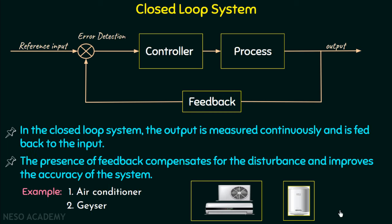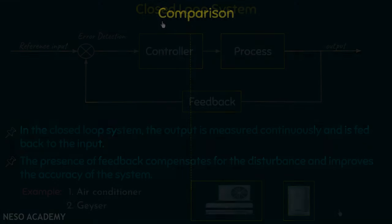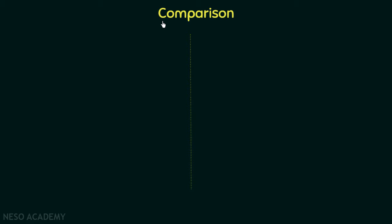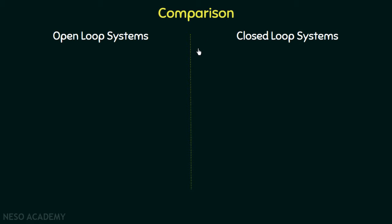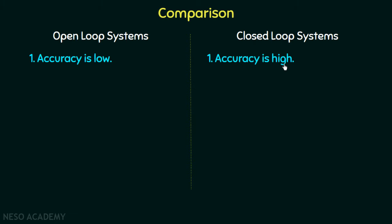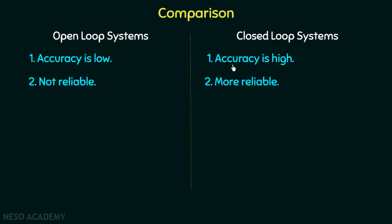Now we are done with the introductory portion of closed loop systems and will have a comparison of open loop and closed loop systems. The accuracy of open loop systems is low because they can't handle disturbance, whereas the accuracy of closed loop systems is high because they are able to handle disturbance. Open loop systems are not reliable because they are not accurate, whereas closed loop systems are more reliable because they are more accurate.